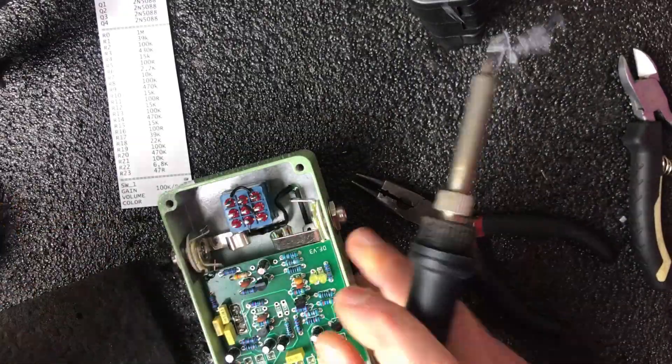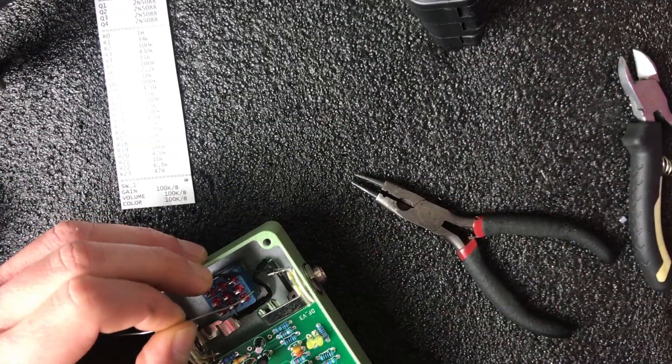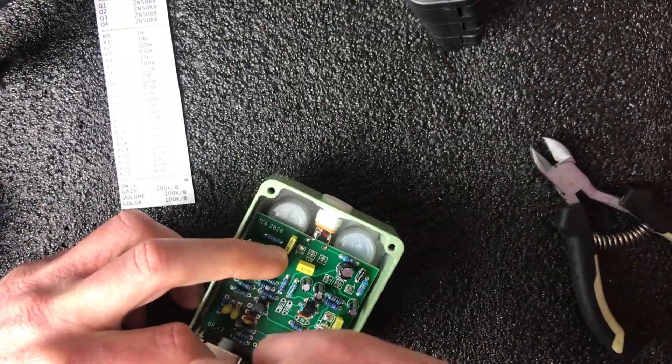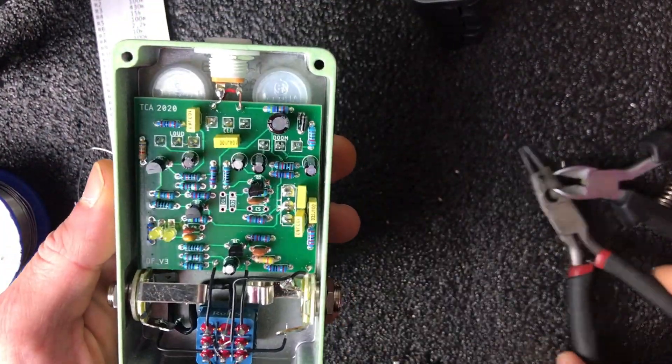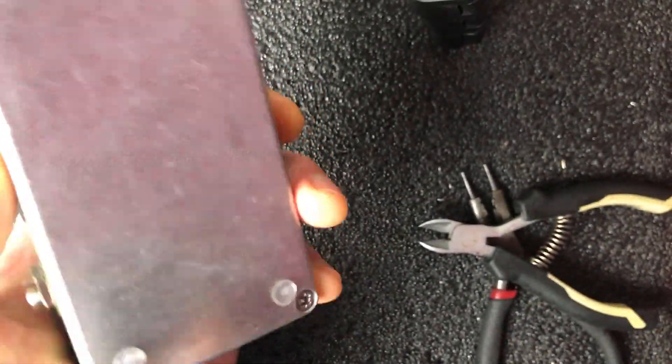Also I'd like to mention here that of course I will prepare also video about preparing enclosure, about drilling, about measuring everything so don't worry I will cover that too. So yeah just a little moment and it's done. Yeah just need to put knobs on potentiometers and close the enclosure. So it's ready and now it's time to rock! Let's check it!